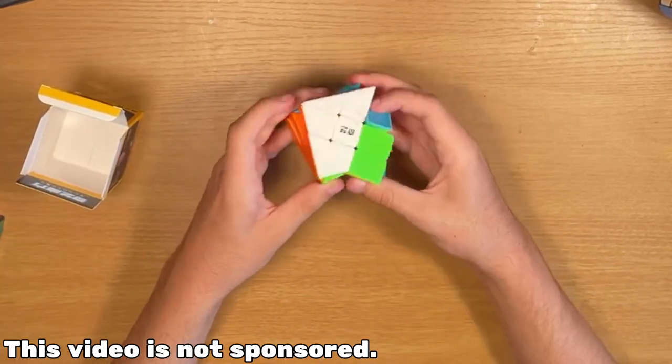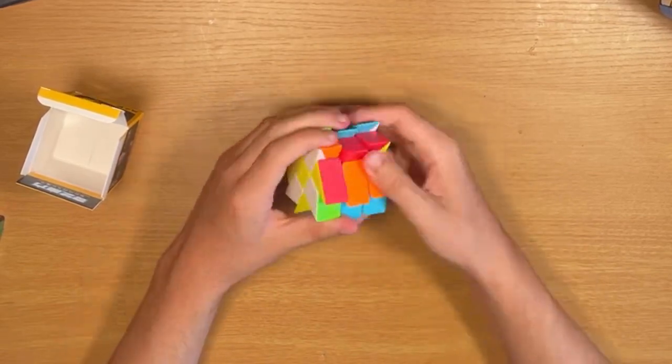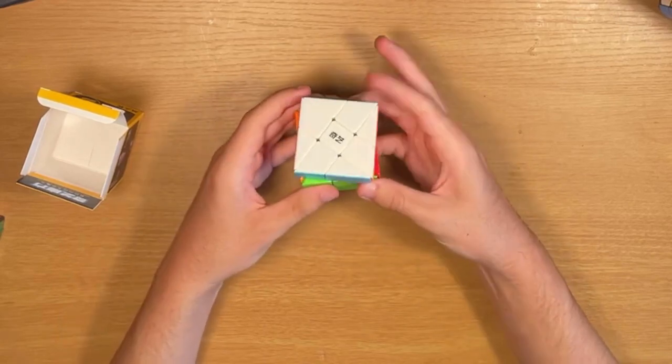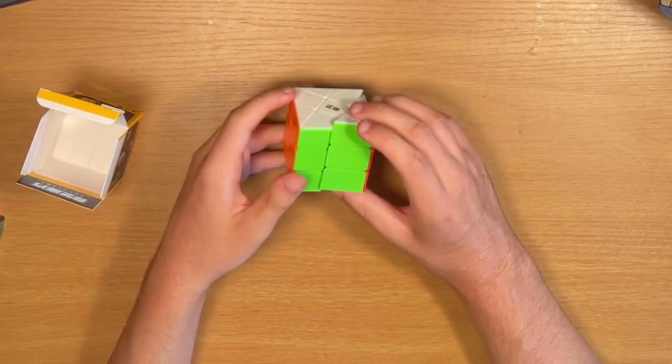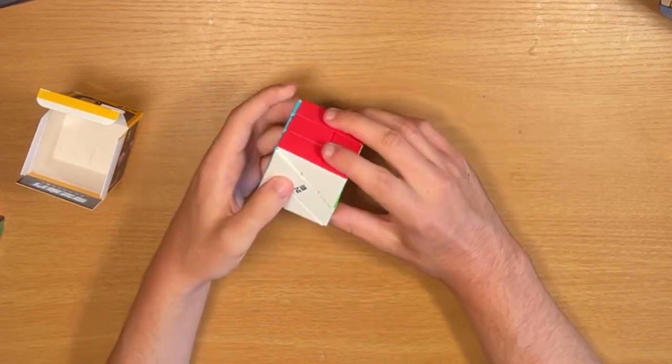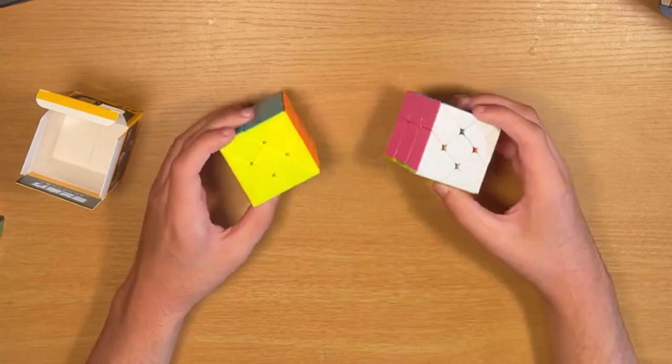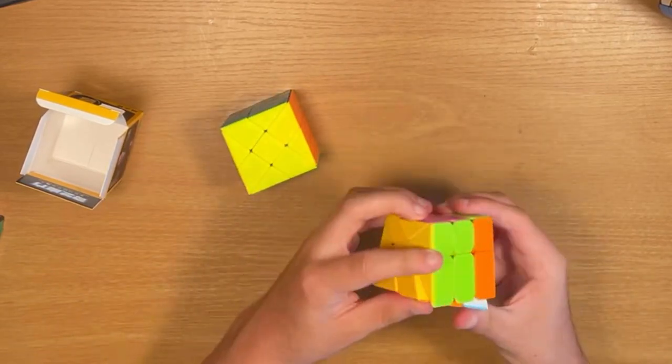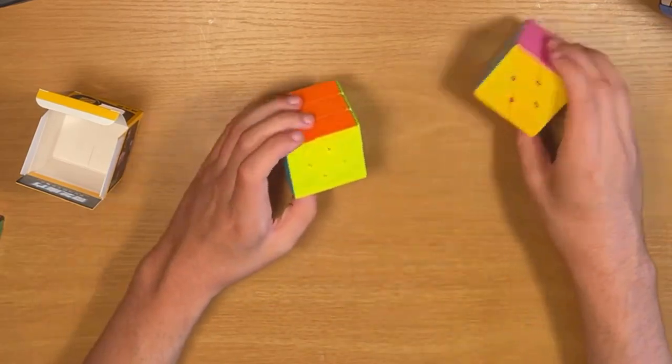And it turns just like you'd expect a non-WCA 3x3 shape mod Speed Cube to turn. Obviously not like flagship cubes turning, but definitely not bad either. I'd say this is pretty good for a 3x3 shape mod, and as a matter of fact, I have a Windmill Cube here to compare it to. Now, I don't know what brand this one is, but I don't think this one turned as well as this one. I think this one does turn a lot better, and just the overall colors are better.